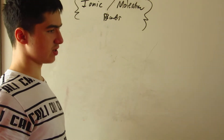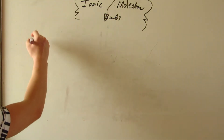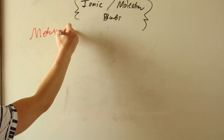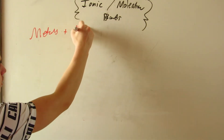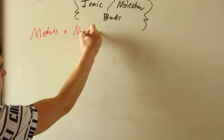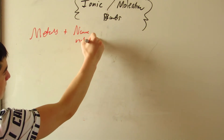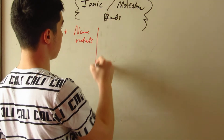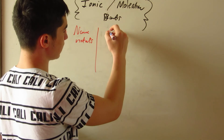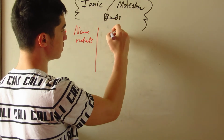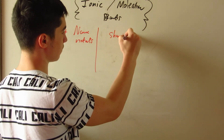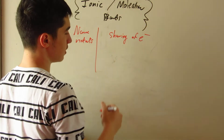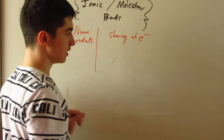What about ionic compounds? Ionic compounds are metals bonded with nonmetals. And for molecular compounds, it's just sharing of electrons between nonmetals.